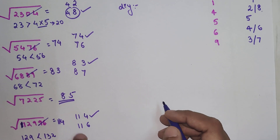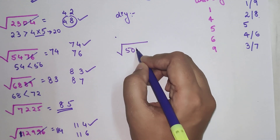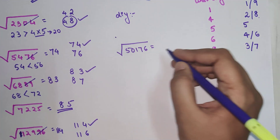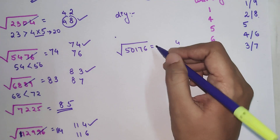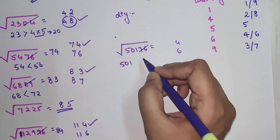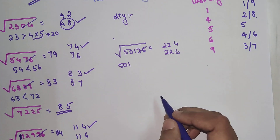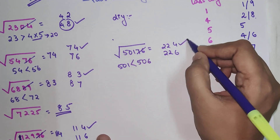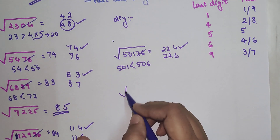Let's try an even bigger number: 50176. The last digit is 6, so possible unit digits are 4 or 6. Striking out the last two digits gives 501. That is close to 484, which is 22². Multiply 22×23=506. Since 501 is smaller than 506, we take the smaller value, so the square root of 50176 is 224.